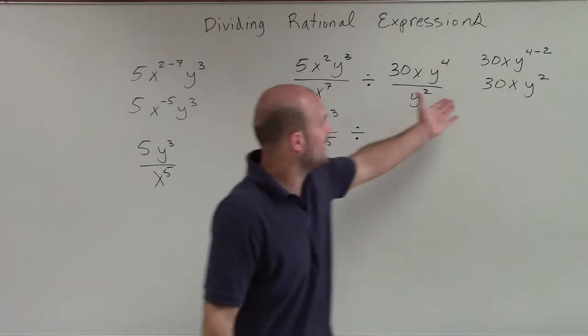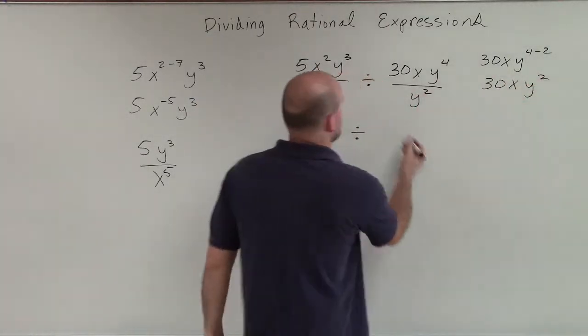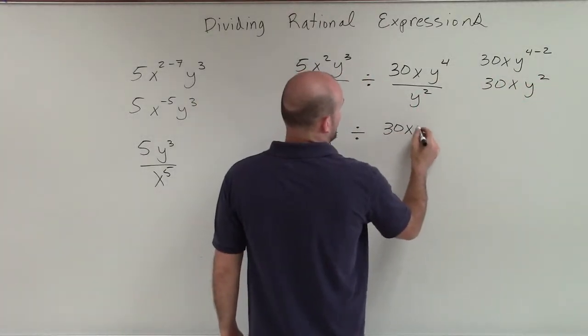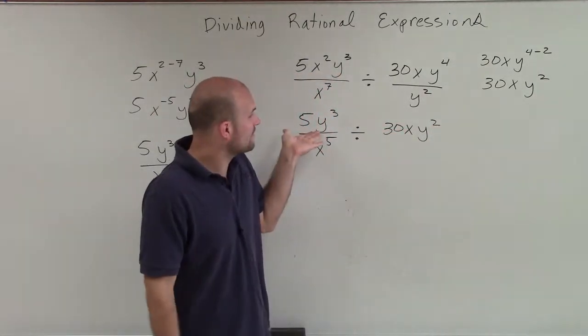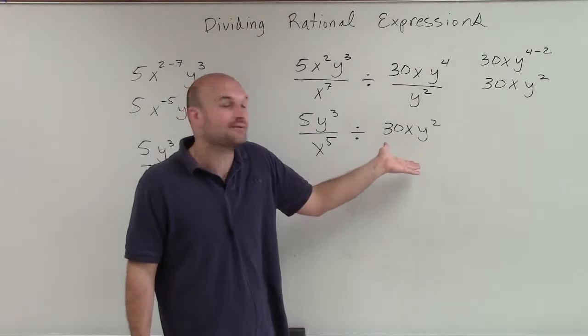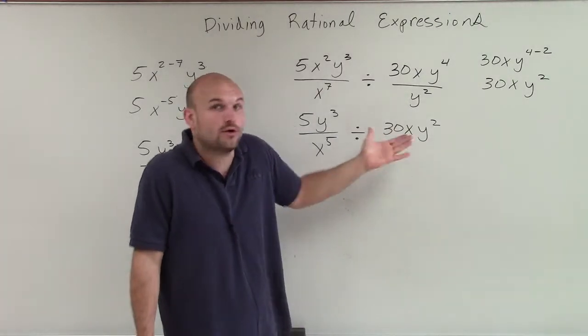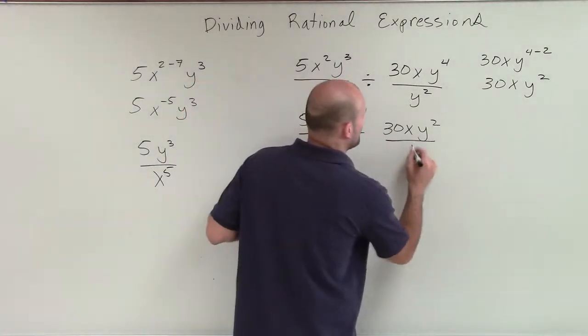30xy squared. So therefore, we're going to have a positive 2 in the numerator. So we'll have 30xy squared. Now, how do you divide a number when you have one rational expression and the other one's not in rational or in fractional form? So we'll put it over 1.